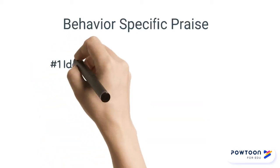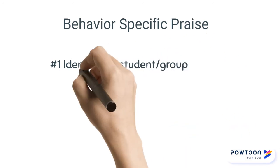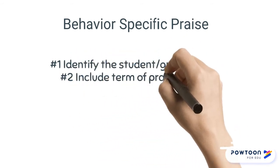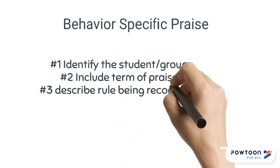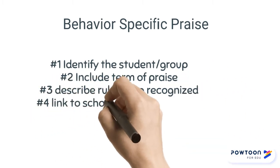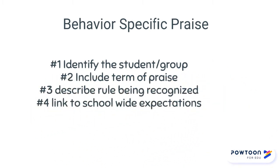The steps of behavior-specific praise are: one, identify the student or group; two, include a term of praise; three, describe the rule being recognized; and four, link to the school-wide expectations.